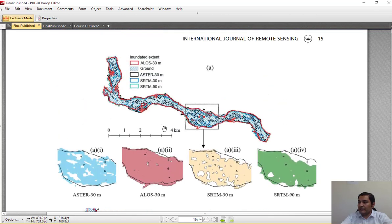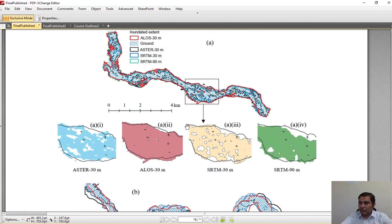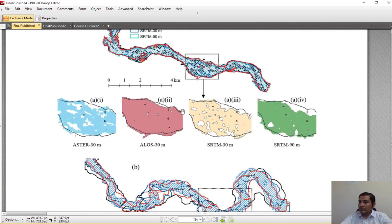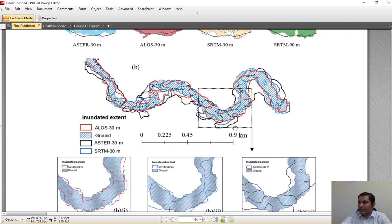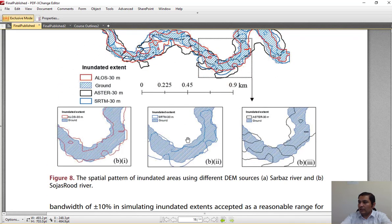In this figure, the spatial distribution of flood extent is shown. You can see ALOS is in complete agreement with ground topographic map outputs, while using ASTER, SRTM centimeter, SRTM 30 meter, and SRTM 90 meter does not lead to accurate or satisfactory outputs. This is for Sarbaz river and this is for Sojas river. Sojas is a smaller river and Sarbaz is a wider river.